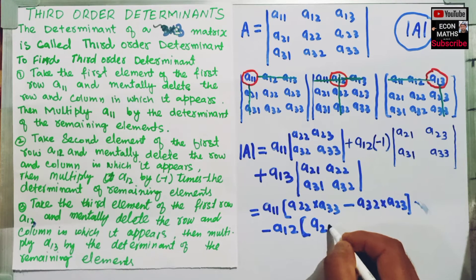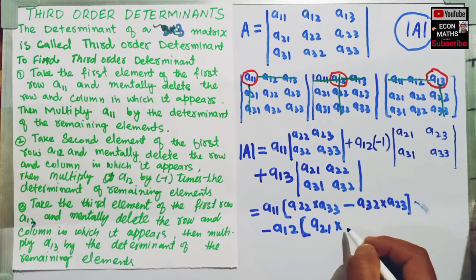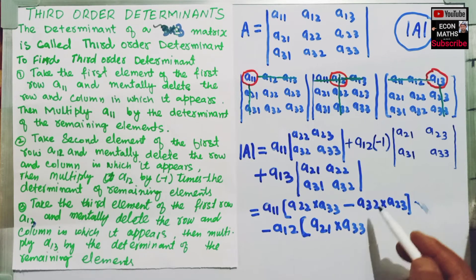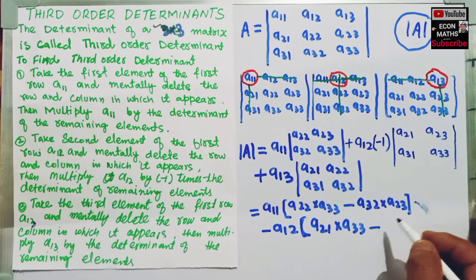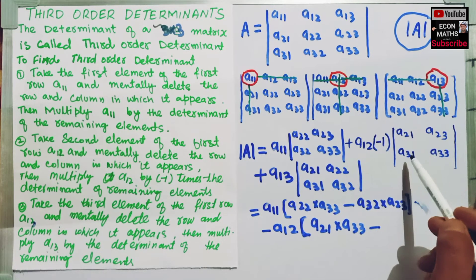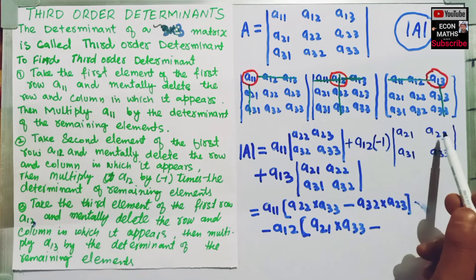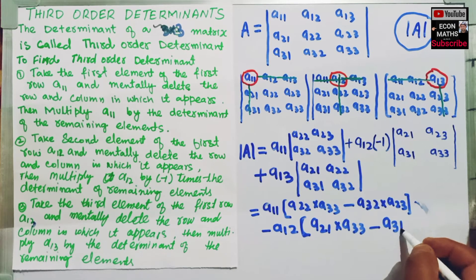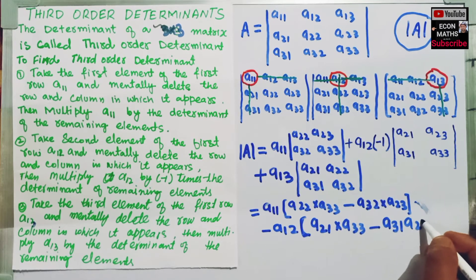We multiply A21 times A33. From this, we subtract the product of these two elements, that is A31 times A23.